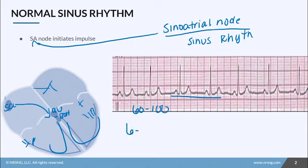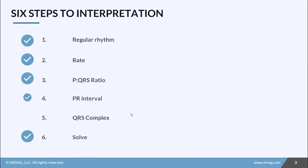And the cool thing about these six steps is it will also help you identify all abnormal rhythms. These steps are the easiest way to interpret a heart rhythm. The first thing you need to look at is the regularity of the rhythm. Is it regular or is it irregular? I'm going to show you how to do that on the next slide.